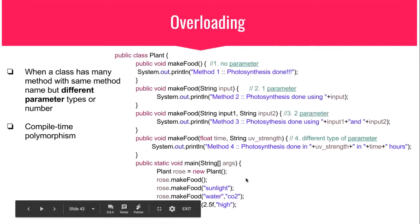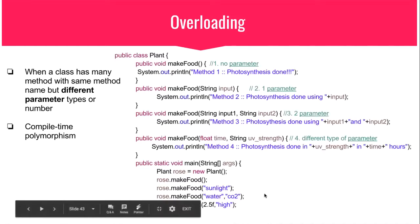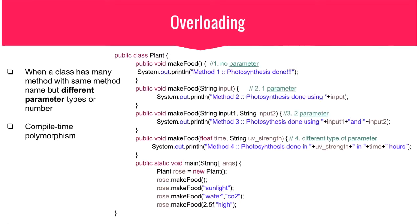When you create the object of such a class and invoke the method, calling rose.makeFood with no arguments invokes the first method. With a String it invokes the second, with two Strings the third, and with a float and String the compiler invokes the fourth. Which method to call is resolved at compile time by checking the parameters — that's why this is called compile-time polymorphism, or method overloading.